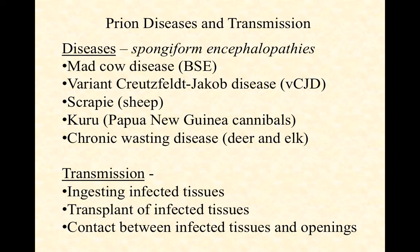The diseases prions cause are called spongiform encephalopathies, because upon examination after the victim's death, the brain looks spongy and mushy. Examples include mad cow disease, also called bovine spongiform encephalopathy; variant Creutzfeldt-Jakob disease (vCJD), which is the human form; and scrapie, which used to be common in sheep.